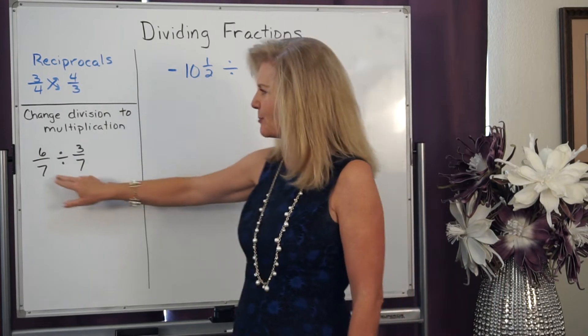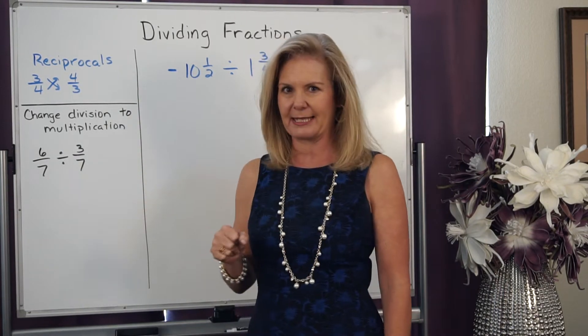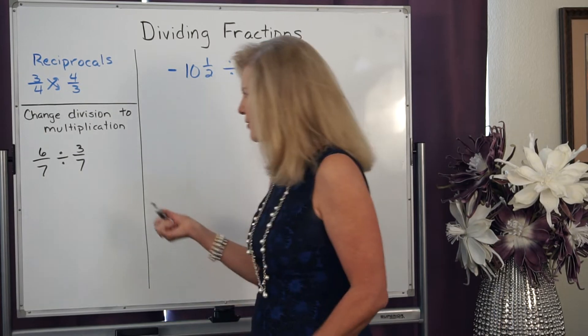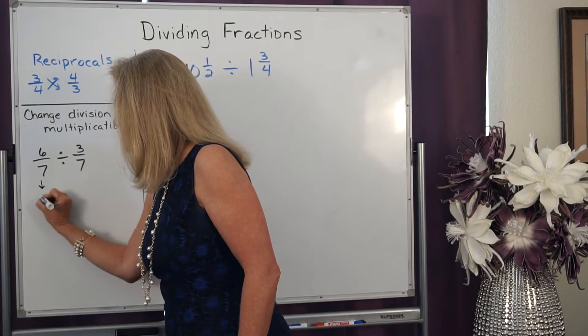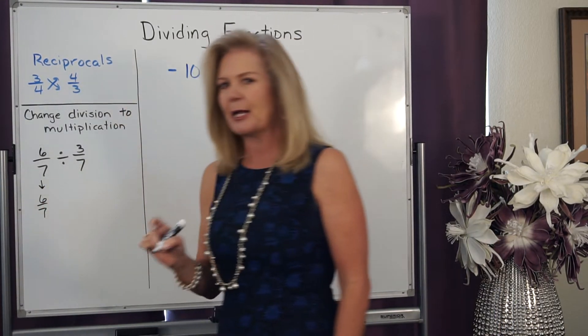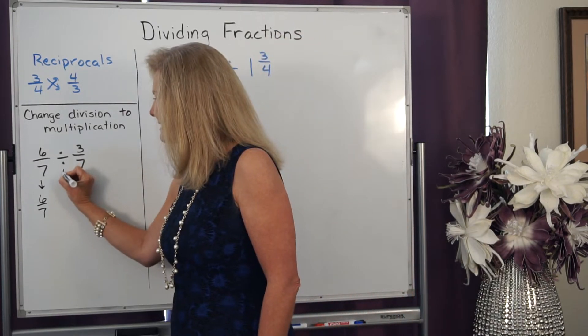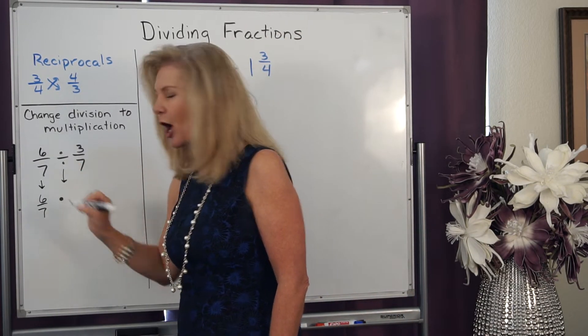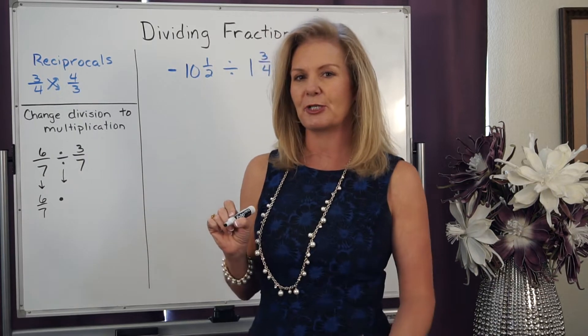So if I have this problem, 6/7 divided by 3/7, what I'm going to do is I always keep the first number the same. So you're just going to bring down the 6/7. But I take that division and I switch it to its opposite operation, which is multiplication.